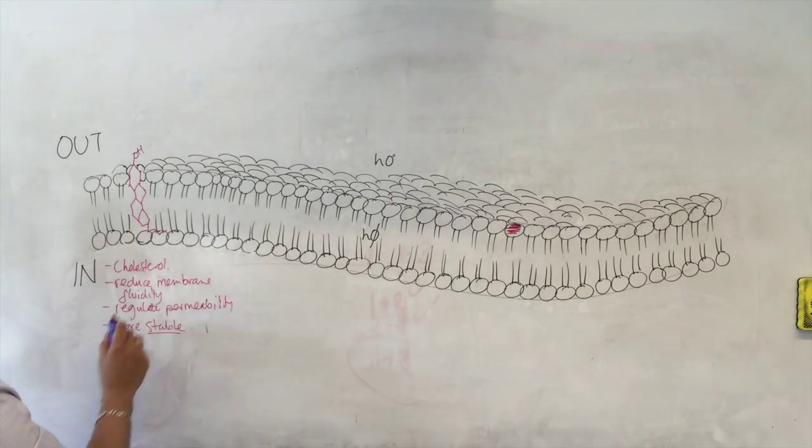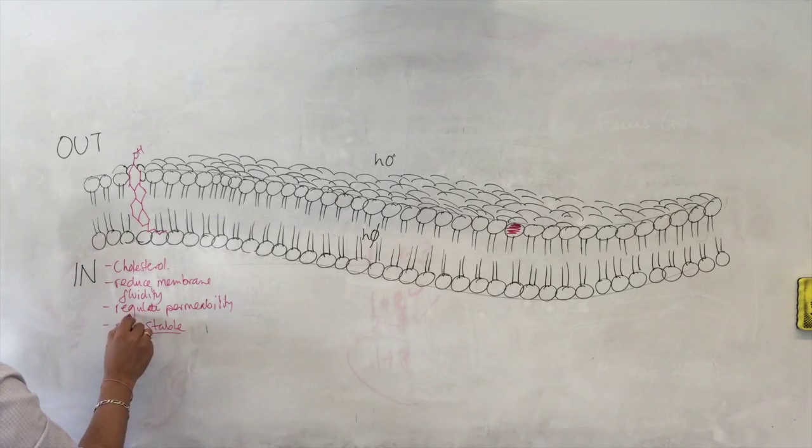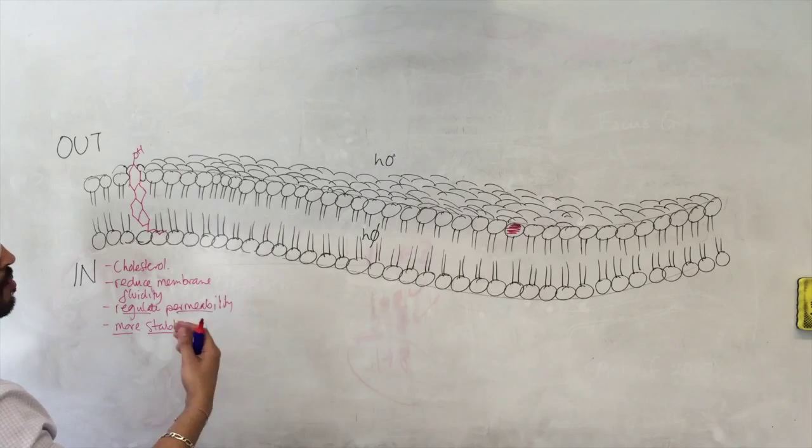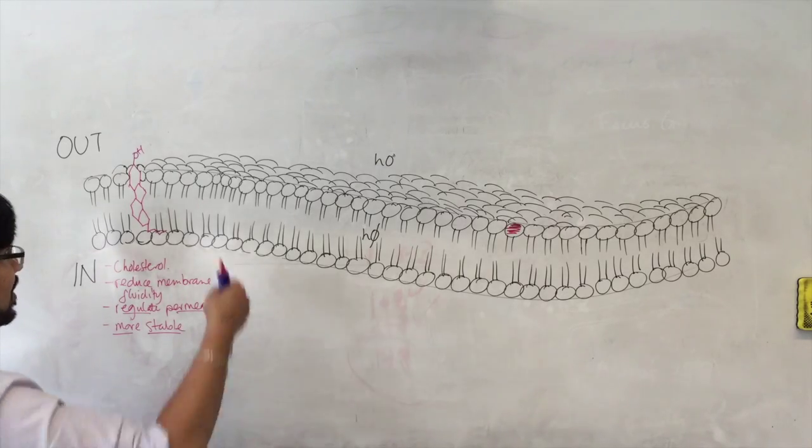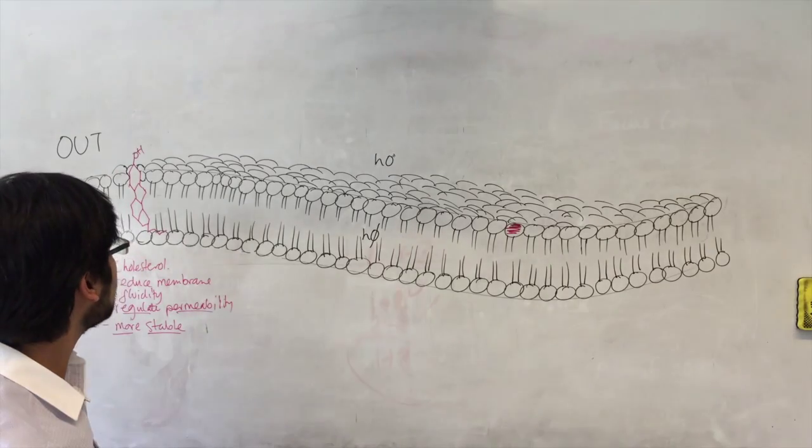What it does is reduce the membrane fluidity. Effectively, what it helps the membrane to do is regulate its permeability, makes it less permeable to things that might otherwise just move through the membrane, and secondly, makes the membrane more stable structure.